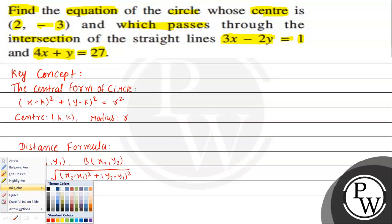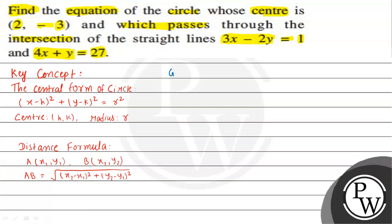We will use both these concepts to solve this question. Suppose C1 is the circle whose center is given as (2, -3), and this circle passes through the point which is the intersection of the two given straight lines: 3x minus 2y equals 1, and 4x plus y equals 27.